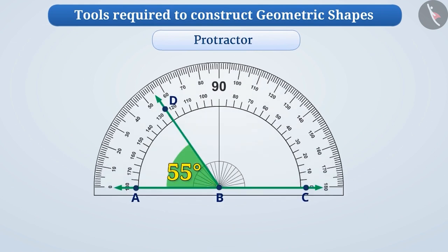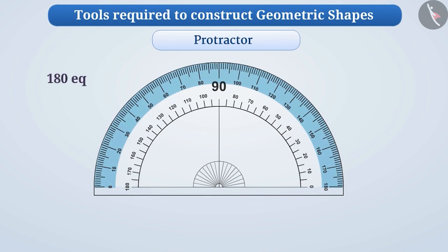It is a semi-circular device and its curved edge is divided into 180 equal parts where each part is called a degree. The measure starts from 0 degrees on the right hand side and ends with 180 degrees on the left hand side and vice versa. We use it to draw and measure angles.